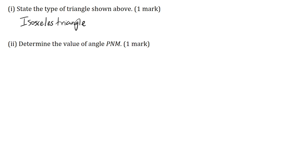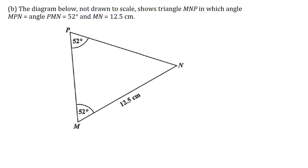Part 2. Determine the value of the angle PNM for one mark. We know that the total interior angles in a triangle is 180 degrees. So if I sum these two angles and subtract it from 180 degrees, I am going to get angle PNM.